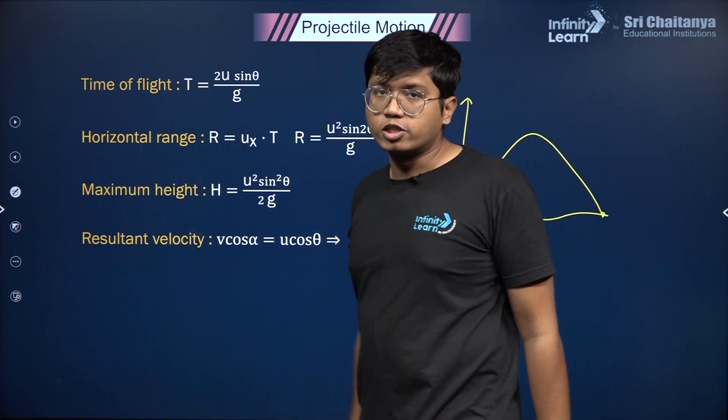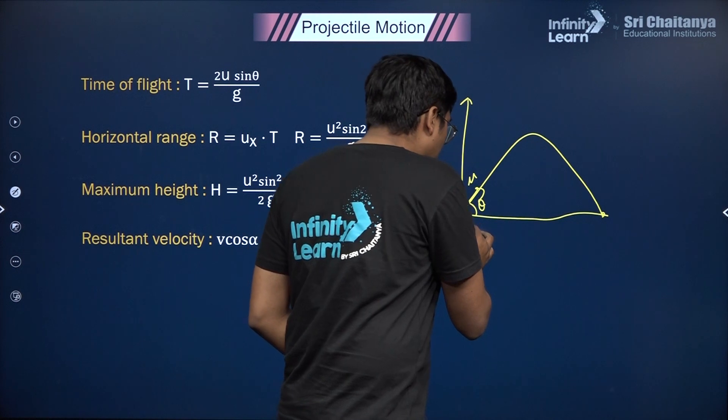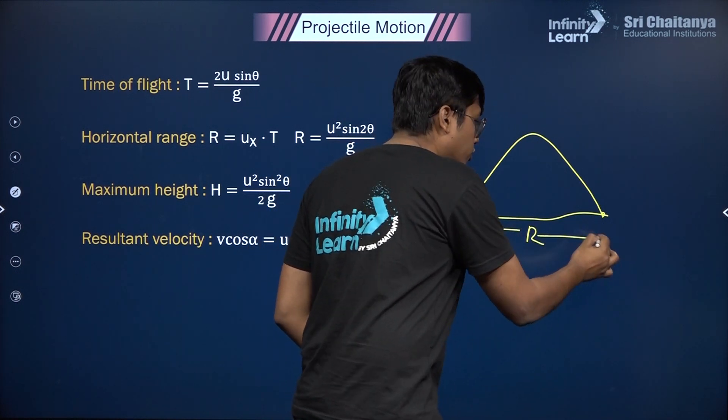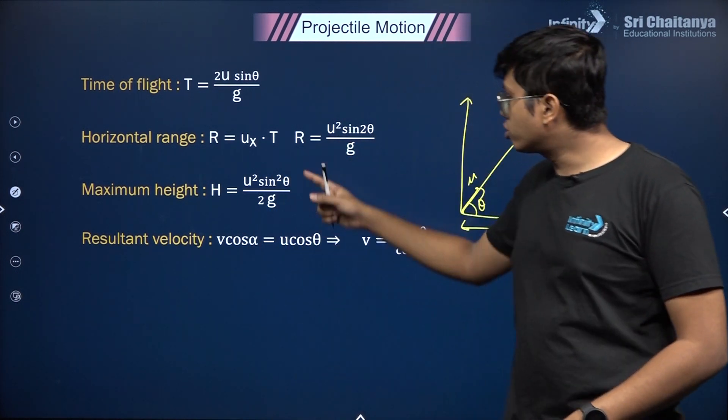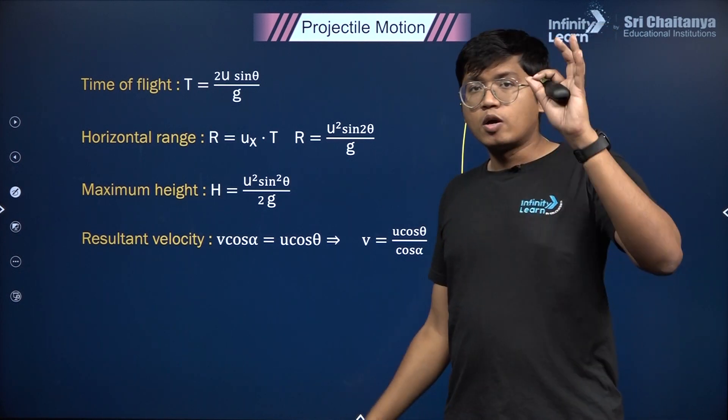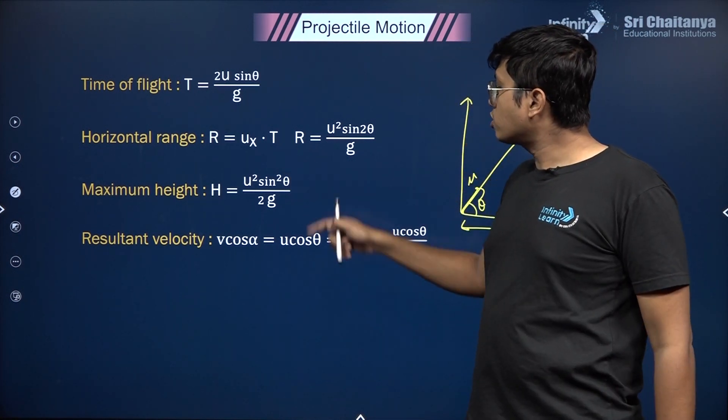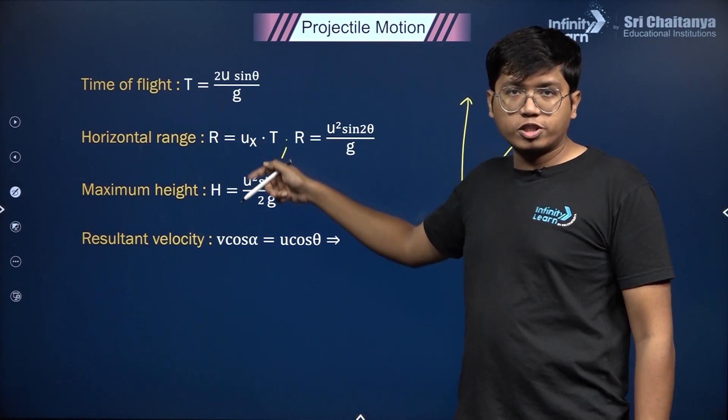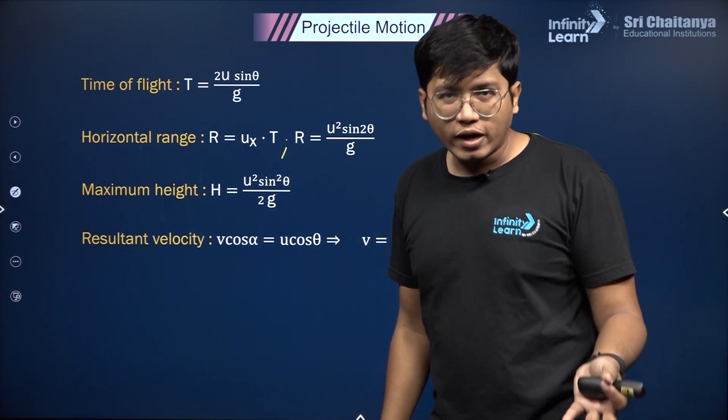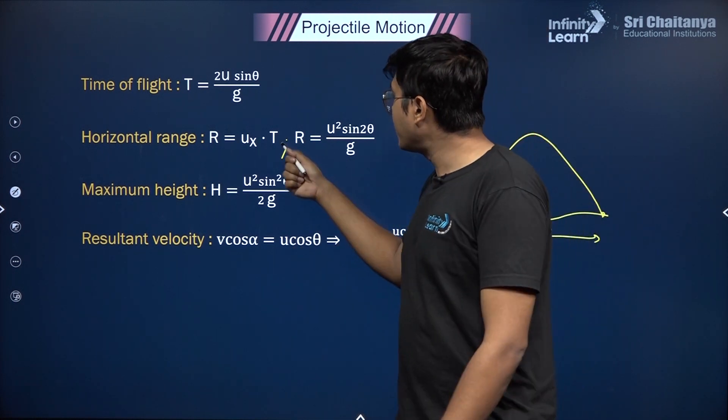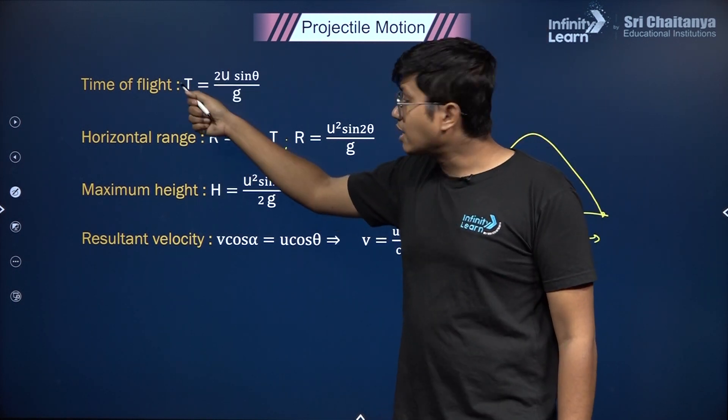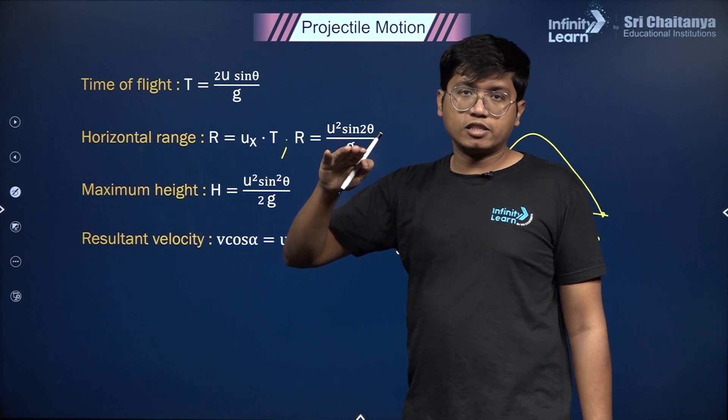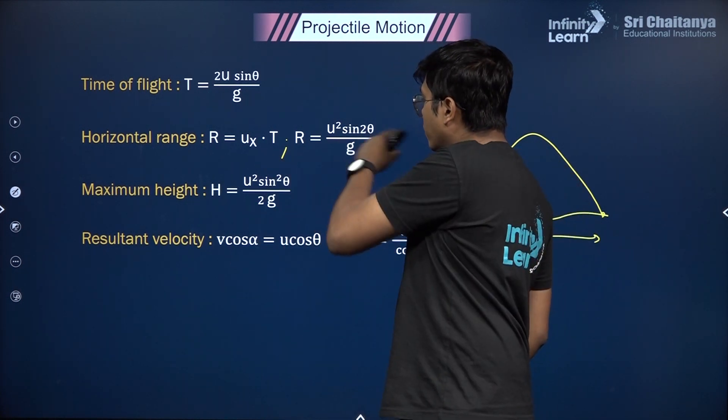Next is the horizontal range, which is how far the projectile moved. This is the horizontal range R given by R = u² sin 2θ / g. The point here is it depends on both components. Even though it's uₓ × t, because it depends on the time of flight, it also depends on the vertical speed.